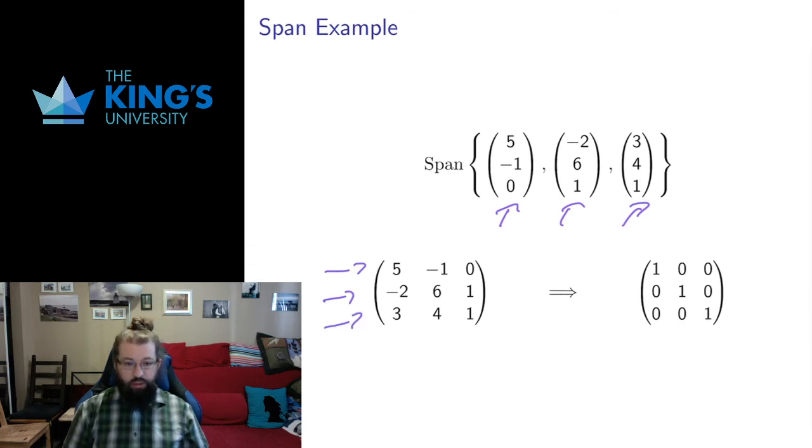It's tempting to put them in as columns because we typically write vectors as columns in this course. We have to sort of flip them, put them in as rows. We row reduce, I'm not going to do the details of the row reduction algorithm anymore. I'm going to rely on the fact that from previous weeks, hopefully you are comfortable with it. If you're not, come talk to me.